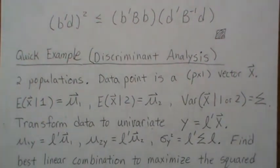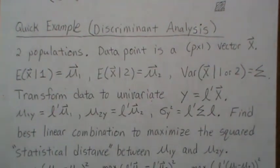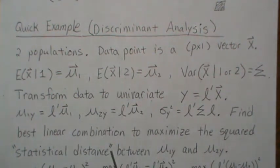And the covariance or variance associated with this linear combination would be this right here. Now, the goal of discriminant analysis is to find the best linear combination to maximize the squared statistical distance between these two means. Now, I have quotes around statistical distance because I have a video out called statistical distance, if you want to get a basic feel or intuition of what that means.